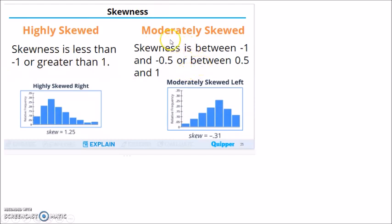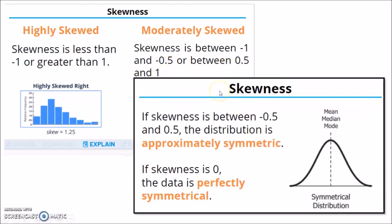When we say moderately skewed, then the skewness should be between negative 1 and negative 0.5, or between 0.5 and positive 1. So this means we prefer the skewness that's within negative 0.5 and positive 0.5. Because if the skewness is between negative 0.5 and positive 0.5, the distribution is approximately symmetric. So it's close to normal distribution.